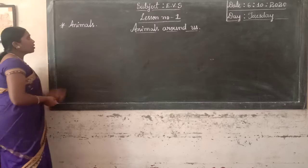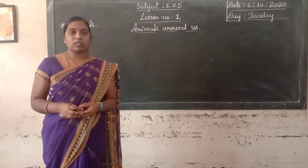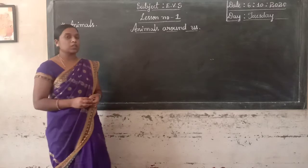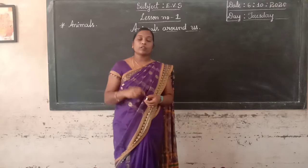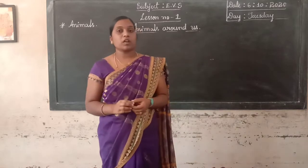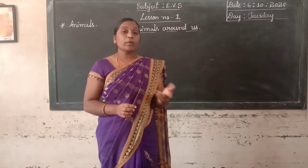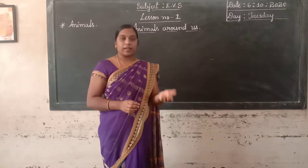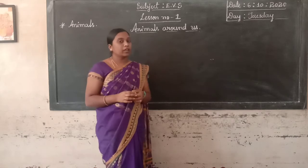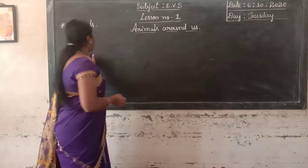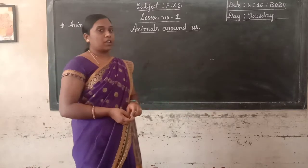Animals are different in their own ways. For example, some animals are very big, some animals are small, some animals are very tall, some animals are very short. For example, elephant — elephant is a very big animal.